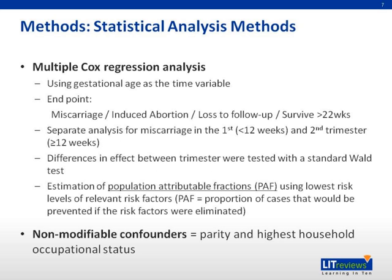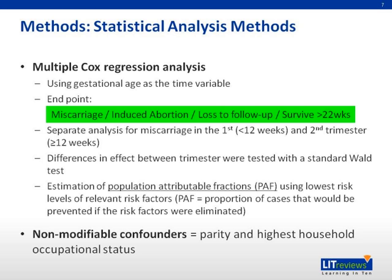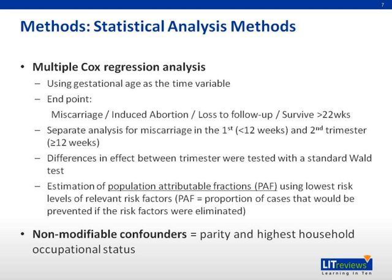Multiple Cox regression analysis using gestational age as the time variable was performed to investigate if any of the nine variables affects the risk of miscarriage. A pregnancy was considered to be at risk of miscarriage from the time of enrollment till the first of the following events: miscarriage, induced abortion, loss to follow-up, or survival to 22 weeks or more. A separate analysis was done for miscarriage in the first and second trimester to distinguish between early and late abortion.